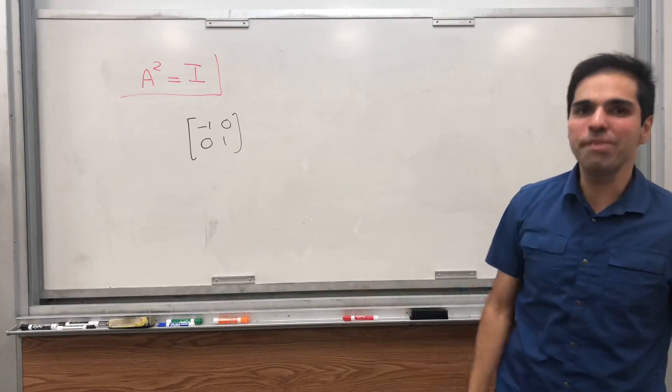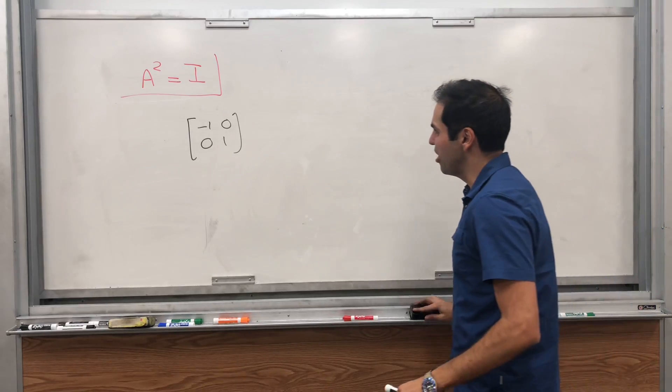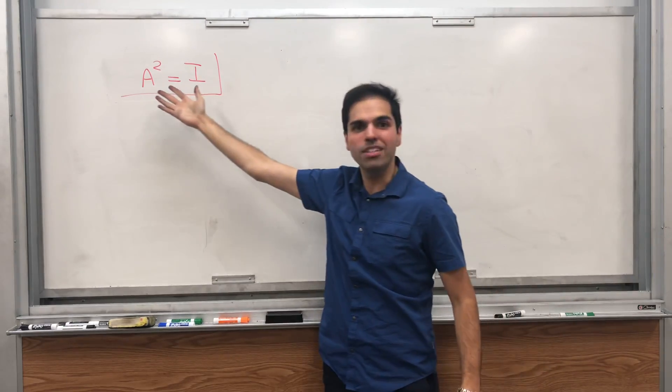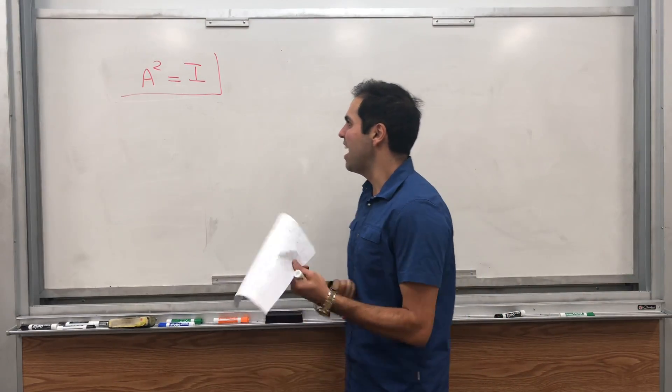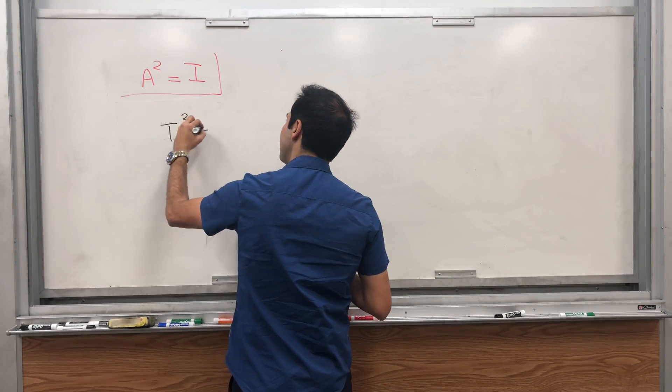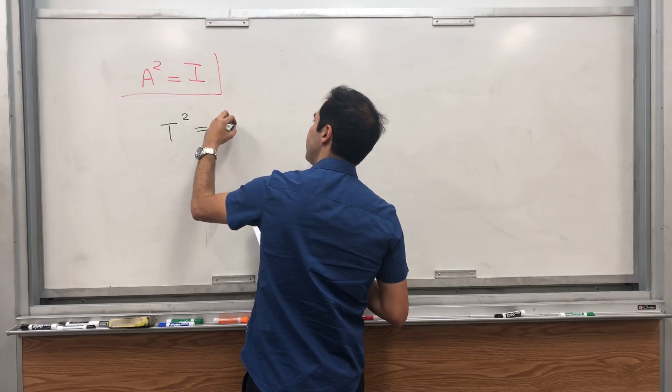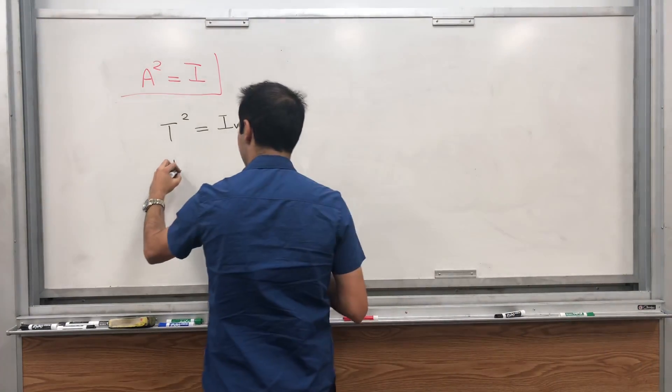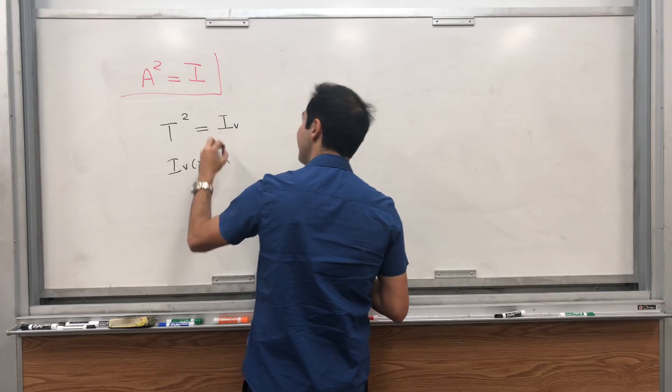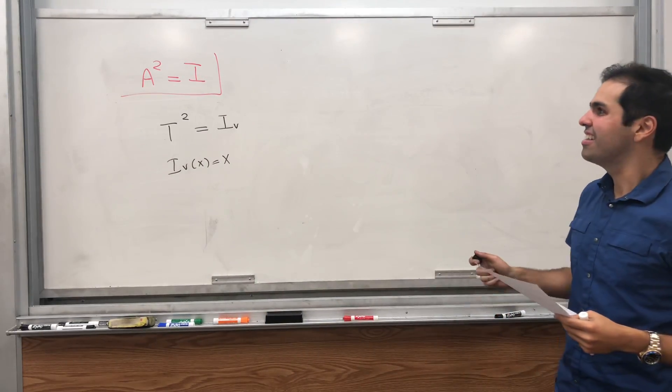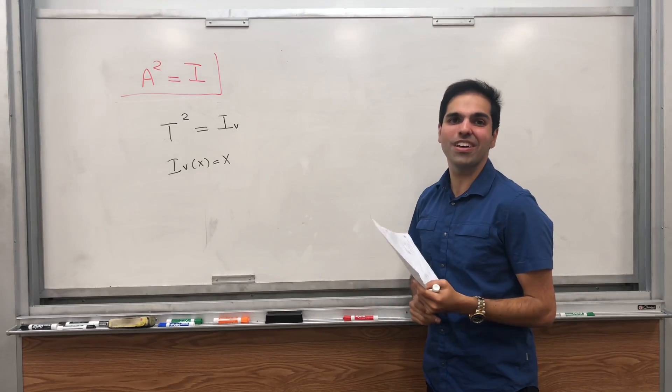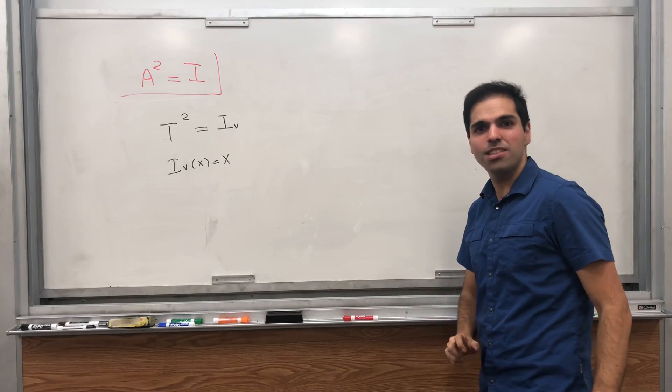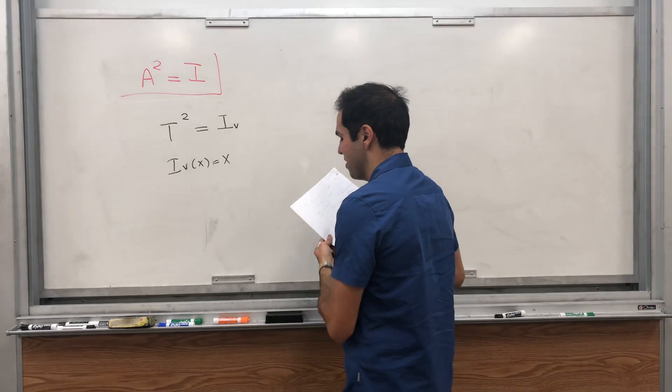The square of this is also the identity, and just like in the previous videos I want to explain geometrically how to find all the matrices whose square is the identity. What I want to do, again first of all, this only works for square matrices otherwise A squared isn't defined, and what I want to do is find all the linear transformations whose square is what's called the identity transformation, so I_V of x is just x.